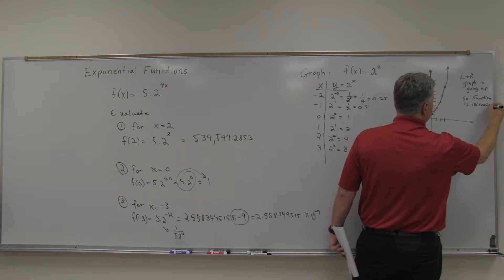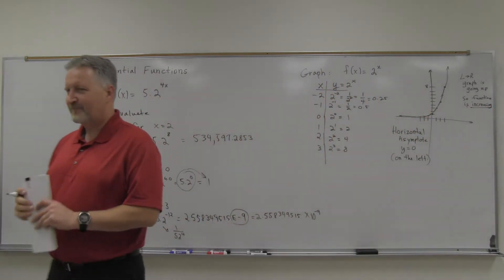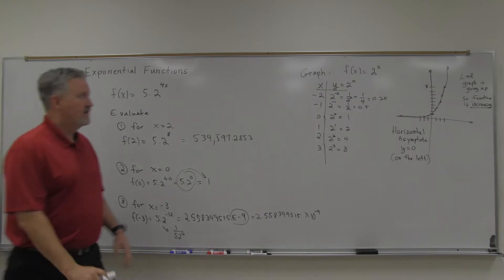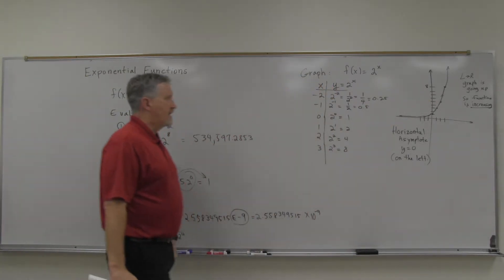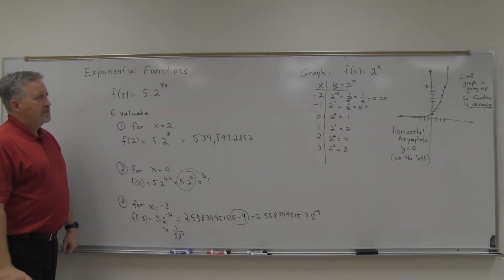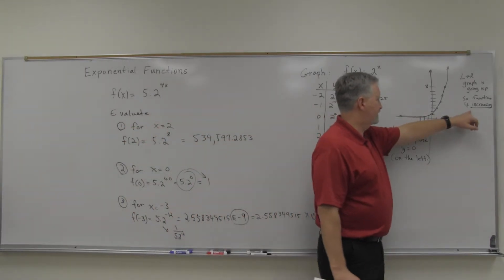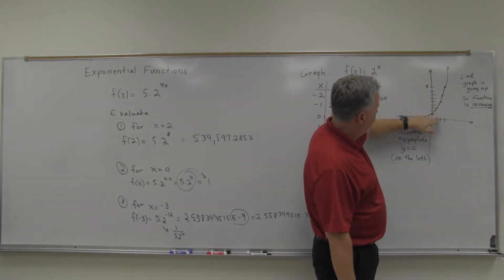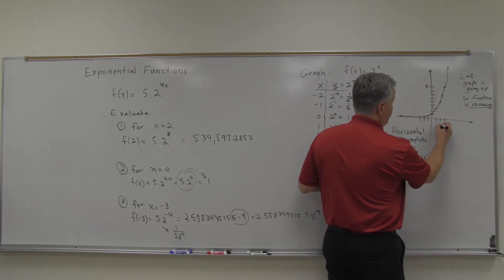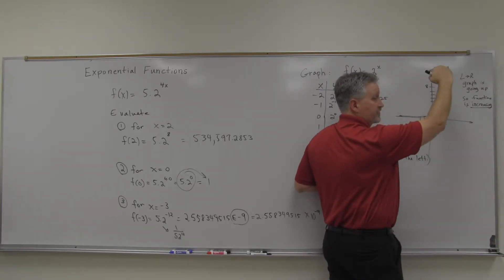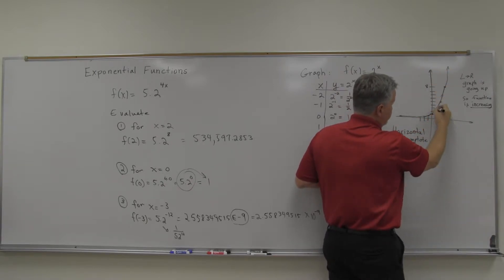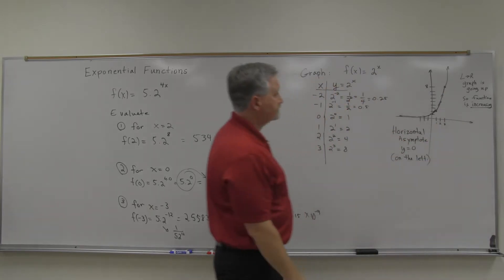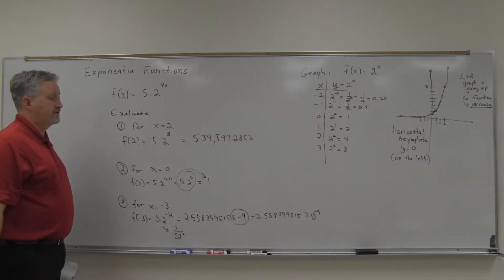This is an example of an increasing function. We'll look at another version of an exponential in a second that's the opposite, and that's another distinction we can make. This is the increasing version of the exponential function. Why do we say that's increasing? It's because of the function values. As you go from x = 1 to x = 2 to x = 3, the function values increase from 2 to 4 to 8. The function values are increasing.